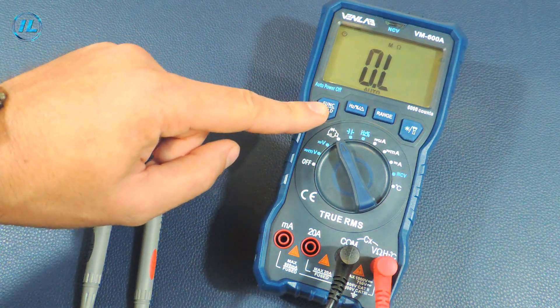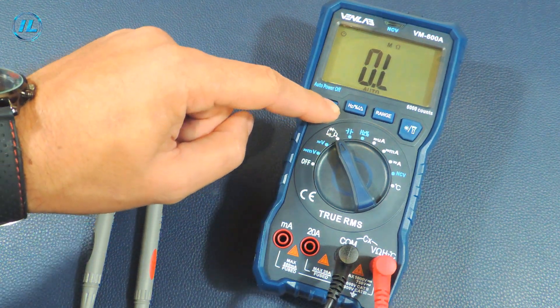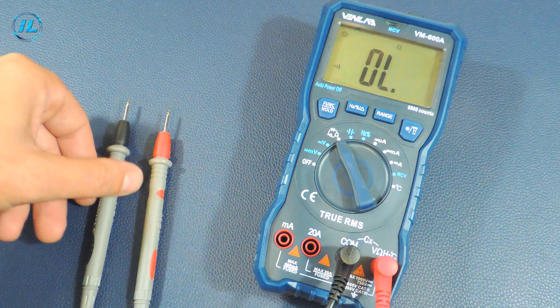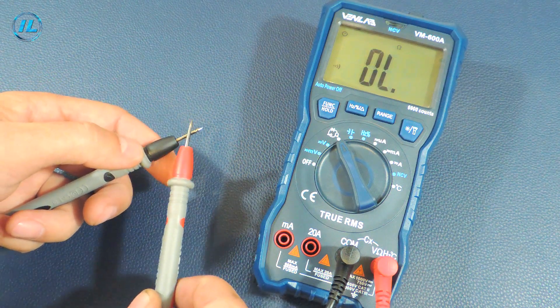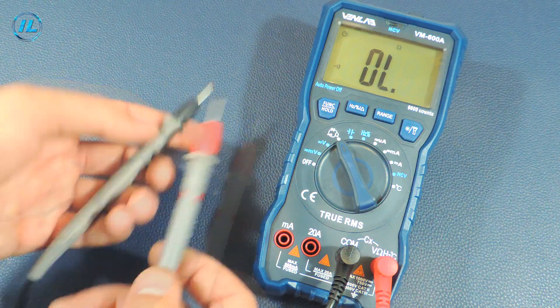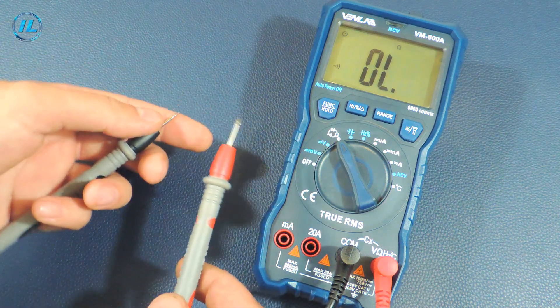Using the function button you can select the following measurement mode: check the electrical circuit and beep. It works great. There is practically no delay.